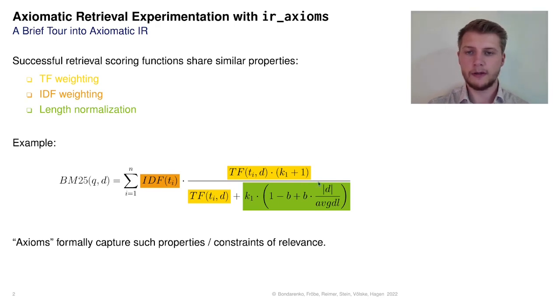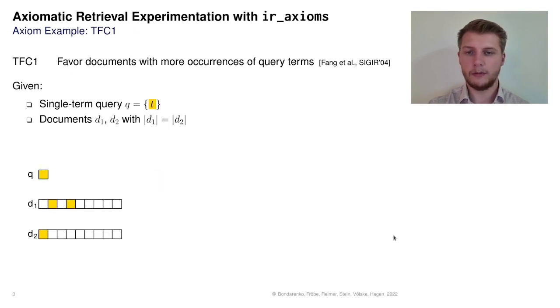A term frequency rating highlighted in yellow, an inverse document frequency rating highlighted in orange, and a length normalization highlighted in green. Let us now focus just on the term frequency rating. One of the early proposed axioms, TFC1,